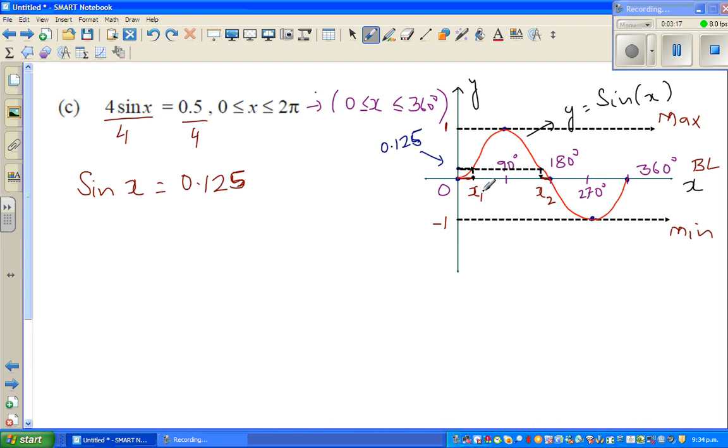Whatever x1 you get, that is by finding the sine inverse of 0.125. So the next thing is you're finding sine inverse of both sides. This reference angle, called the principal angle, is sin inverse. The calculator will give me your first angle which is x1.